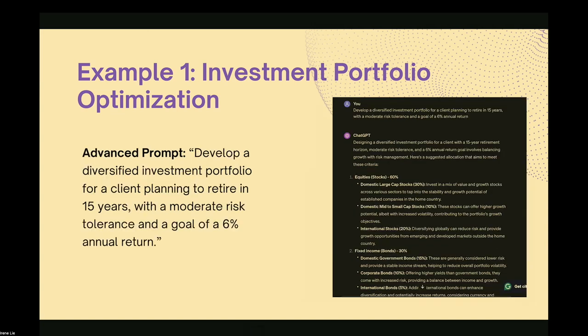However, with a more advanced prompt — for example, 'develop a diversified investment portfolio' where you also specify the number of years, expected return, and risk tolerance — the response from ChatGPT is so much better. You can see actual numbers are provided, suggestions are much more specific and contextualized, with allocations like large/small domestic, government bonds, corporate bonds, and international bonds.